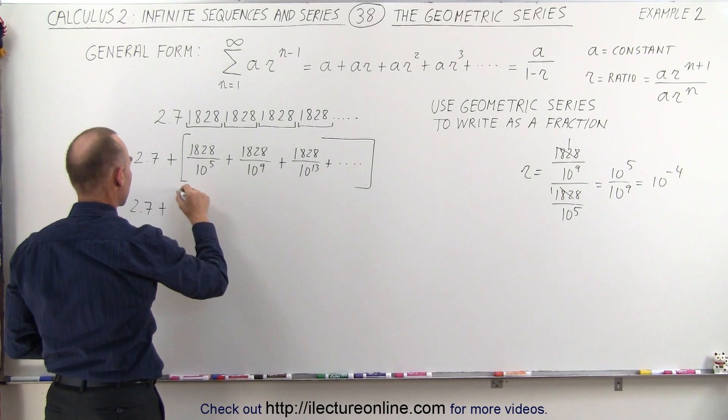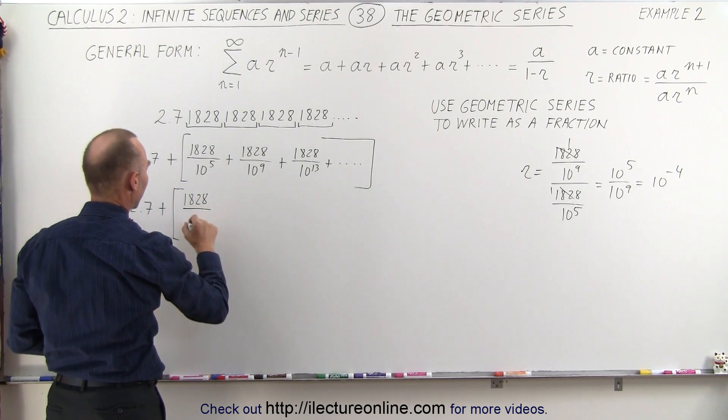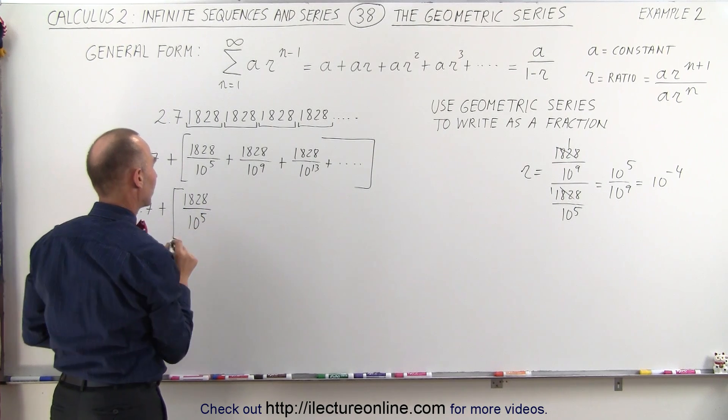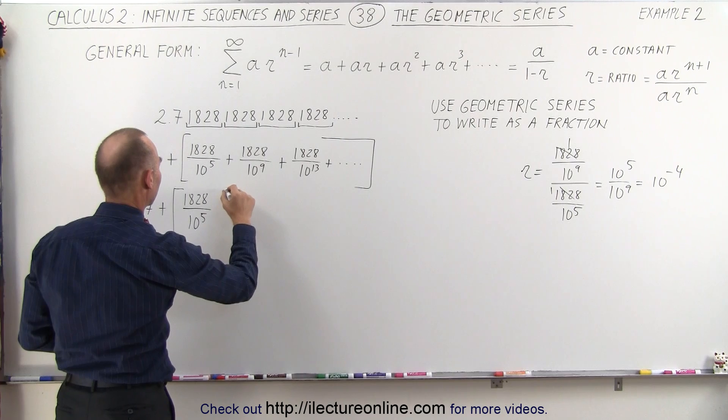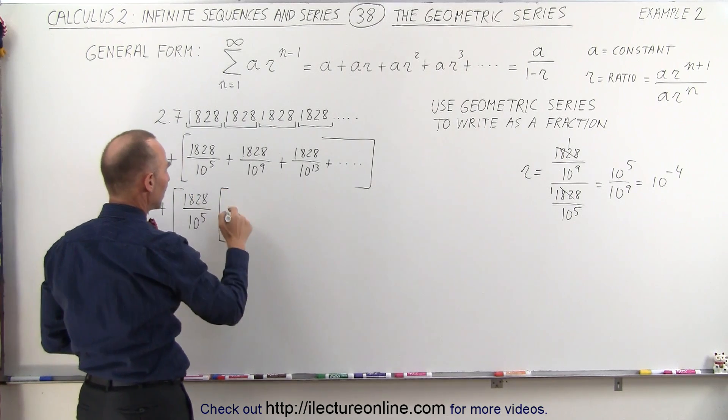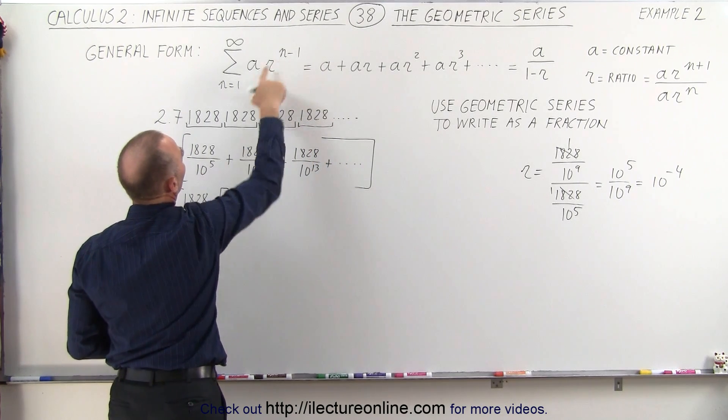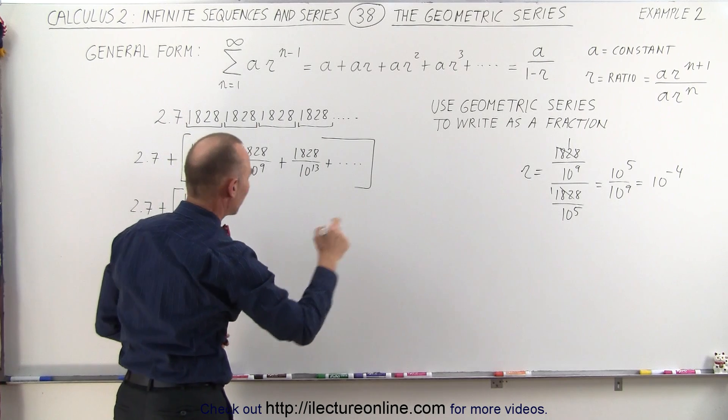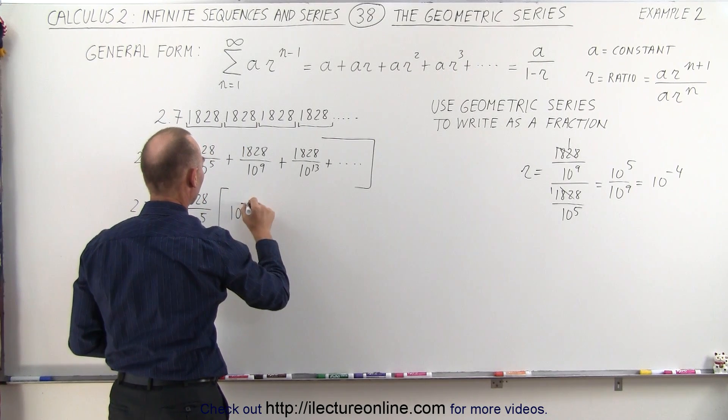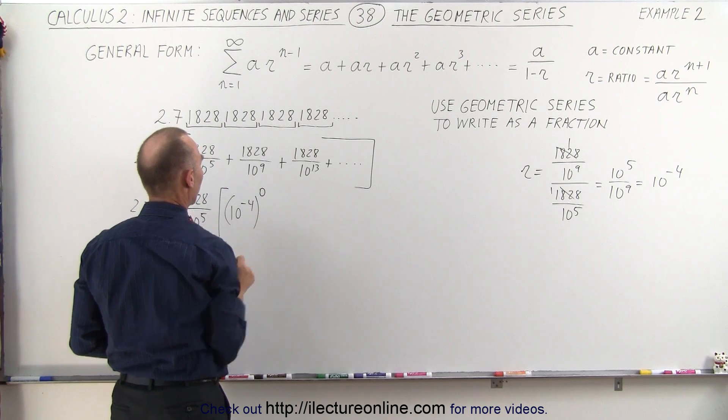So this is going to be 1828 divided by 10 to the 5th, and then we have the following. You can then multiply this times the first term will be the ratio to the 0 power. So the n minus 1 power, since n starts at 1, n minus 1 is 0. So we take the common ratio of 10 to the minus 4 and raise it to the 0 power.